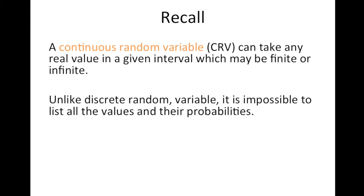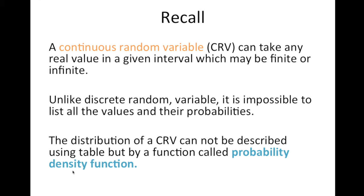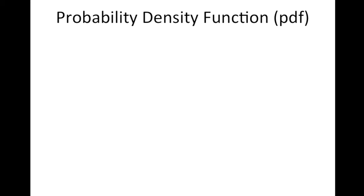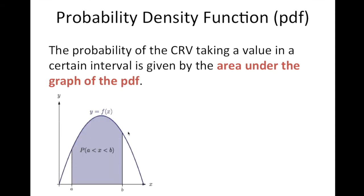Unlike the probability distribution of a discrete random variable, where we can come up with a table listing all values and their probabilities, for the CRV it can only be described using a function — which we call the probability density function. If you would like to get the probability of a CRV in a given interval, that can be described by the area under the graph of the PDF.